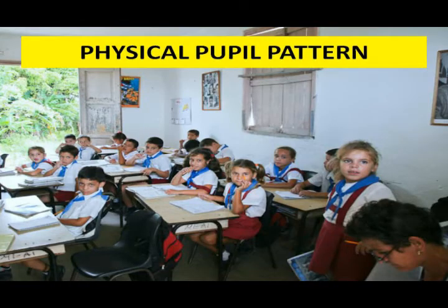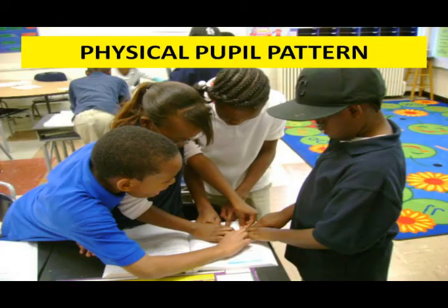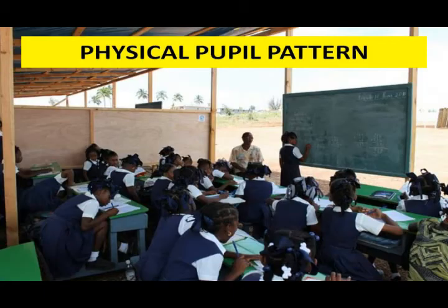The fifth component is physical participation pattern. For example, the student moves towards the blackboard to work out the problem, or students hold the chart, and so on.